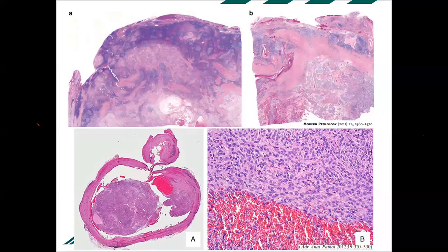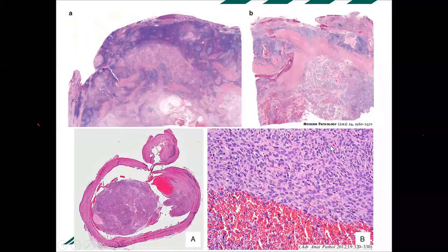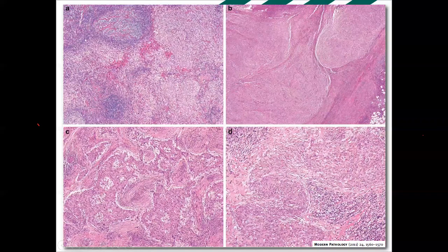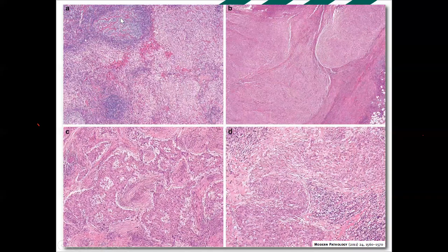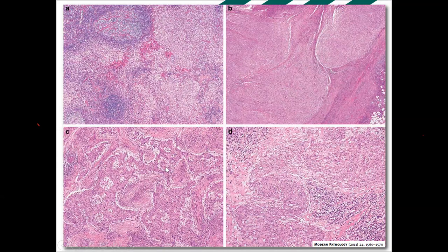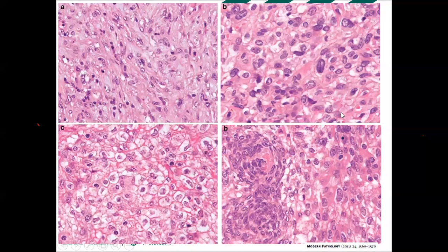That's what happens when you name a tumor descriptively and then study more cases — the histologic spectrum turns out to be much wider. AFH can show a very wide range architecturally and cytologically: coalescent pale-staining nodules in a background of lymphocytic inflammation; closely packed light-staining nodules; anastomosing plexiform islands; or a more serpentine configuration.